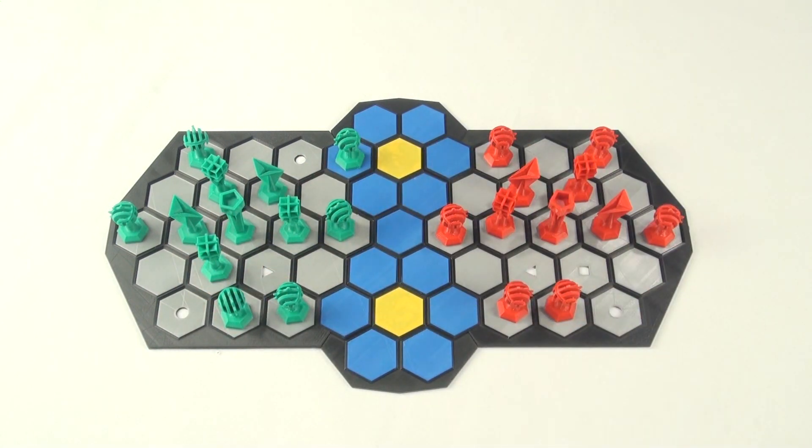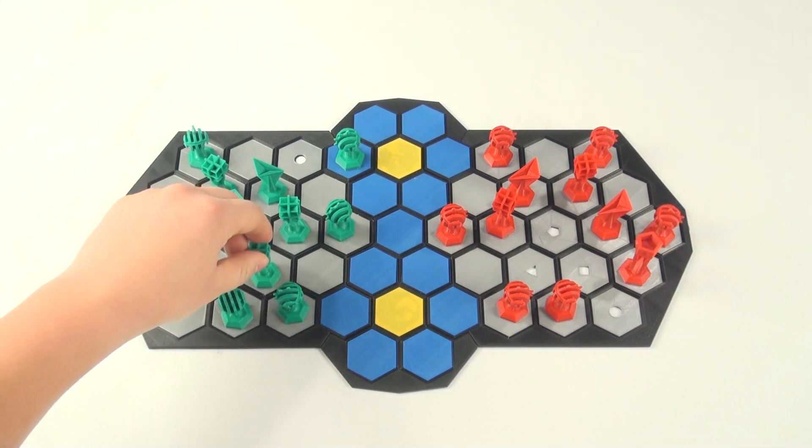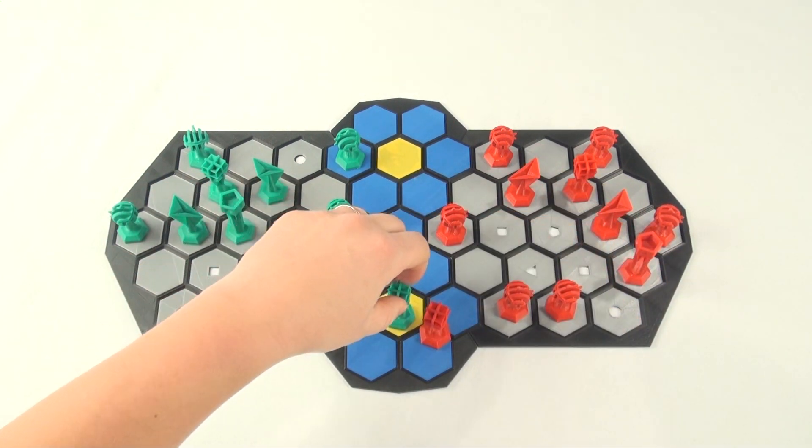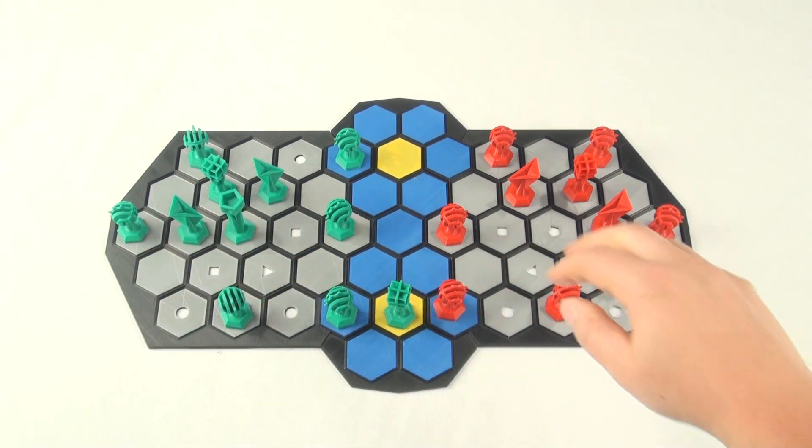Green clumsily brings a circle forward. Red takes this chance to retreat his Pentagon. Green retakes the objective which is quickly countered, which is countered again. Red advances with a circle and green does the same. Red converges on the contested hex.